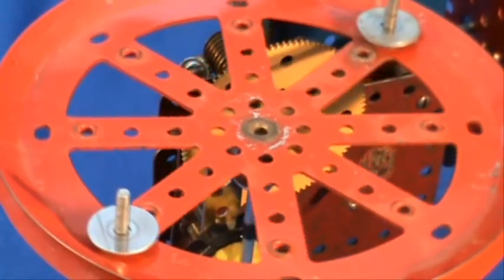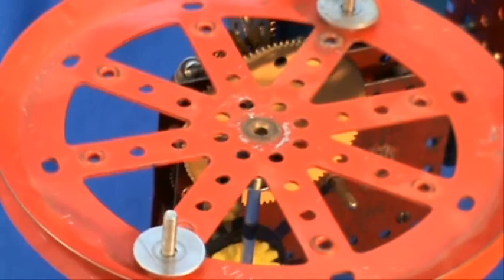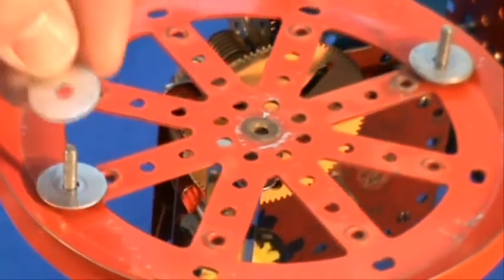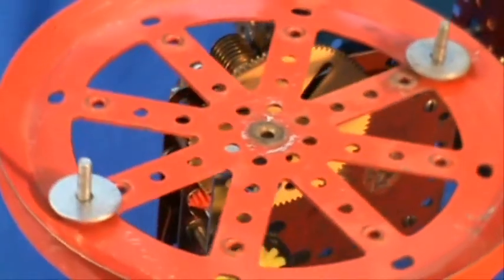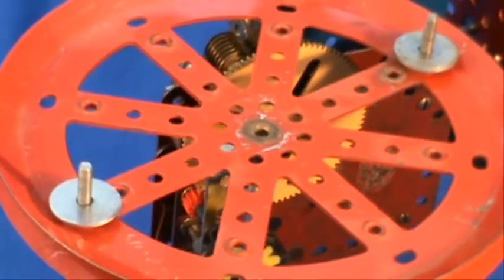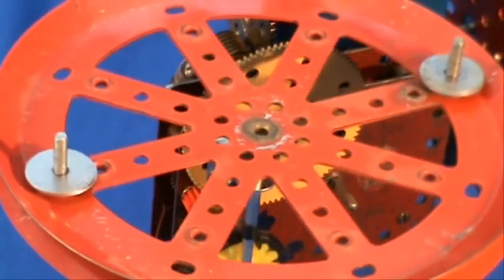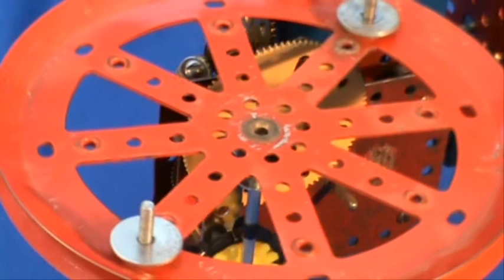We can increase the time taken for the escapement wheel to turn by adding washers onto the balance wheel. Ideally, we want a time of 18.189474 seconds.